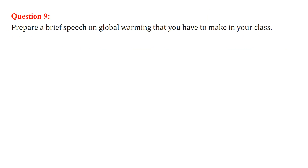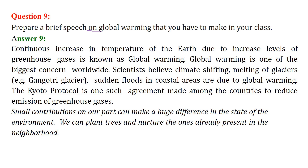Prepare a brief speech on global warming that you have to make in your class. Be very specific about what is global warming, what are its effects, and how we can work to reduce it. Continuous increase in the temperature of Earth due to increased levels of the greenhouse effect is global warming. Greenhouse gases have the tendency to absorb heat and not let it escape the atmosphere, creating an increase in temperature — acting as a blanket covering the Earth. Scientists believe climate shifting, melting of glaciers, and sudden floods in coastal regions are all due to global warming.